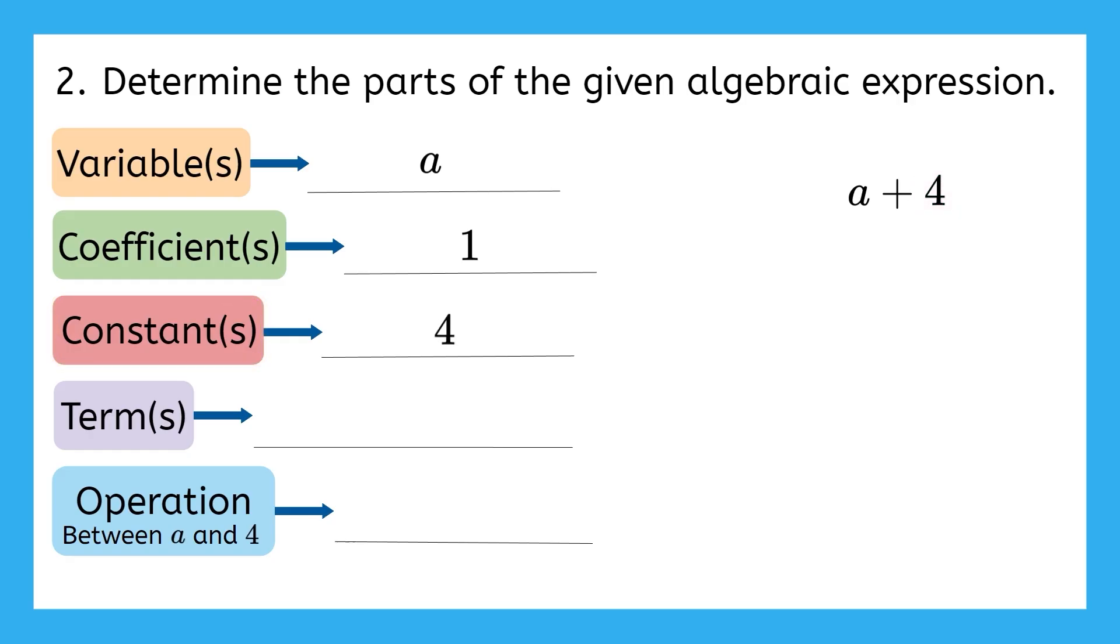Now, how many terms do we have in the expression a plus four? We have two terms in this expression, a and four. And lastly, what is the operation that is between a and four? Addition, exactly. It's also the operation that splits this algebraic expression into two terms. Nice work!